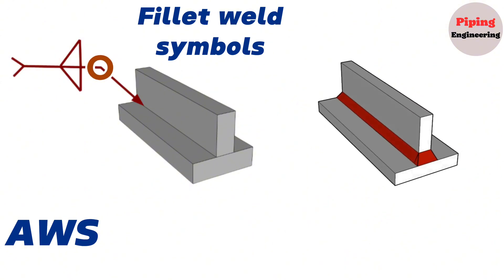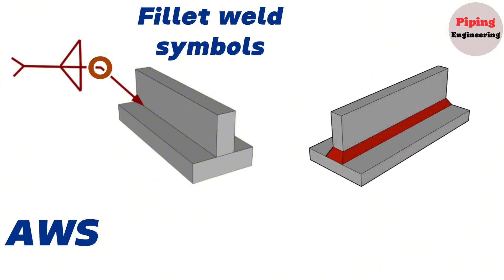Sometimes fillet welds have circular symbols which means that the weld will be around all perimeter.